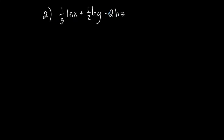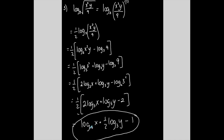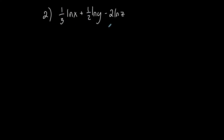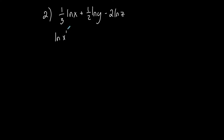I have a sum or difference of separate logs — this is like the end of an expansion, the expanded case. I'm now going in the opposite direction. The first thing I need to do is get rid of the coefficients. So one third goes into the exponent using the power property, going from coefficient to exponent. This gives: ln of x to the one third, plus ln of y to the one half, minus ln of z squared.